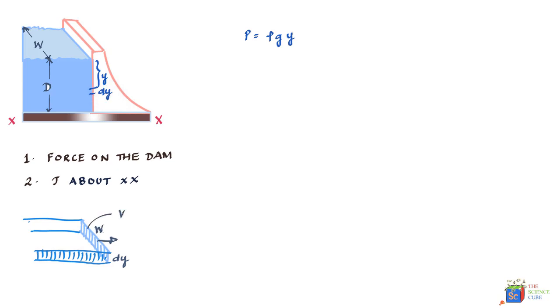So if this is the pressure at this point over here, that is ρgy, because this strip is y meters below the surface of the water, we can say that the force at this point, or rather the force exerted by the slice of water, is nothing but the product of pressure and the delta A area.